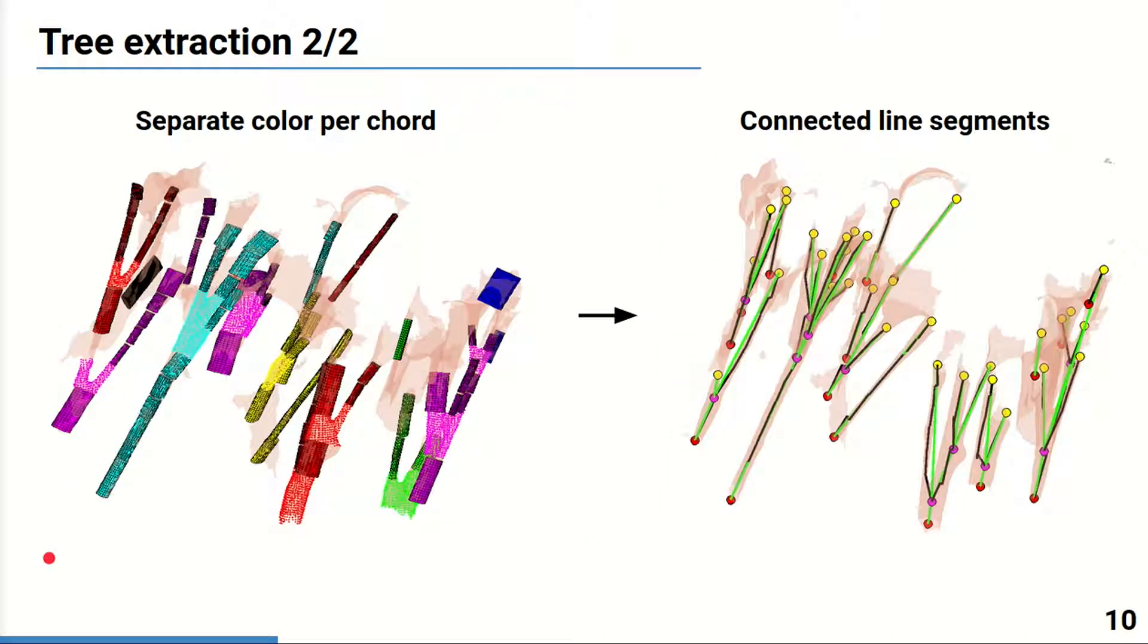Here you can see an example of resulting trees of connected cylinders and branching zones. Each chord is shown in a separate color. The approach allows to segment the complex chordae structures with multiple branchings. The cylinders and branching zones are then represented as line segments, as shown on the right in green.